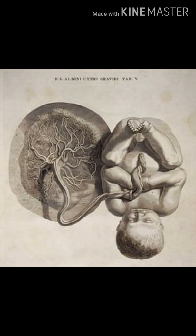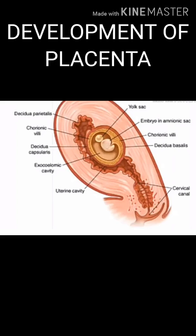The Placenta is developed from two sources. One is Chorionic Frontosum and the other one is Decidua Basalis.